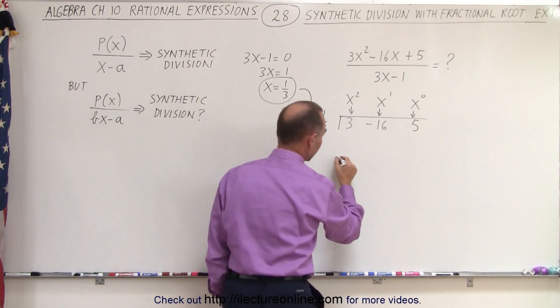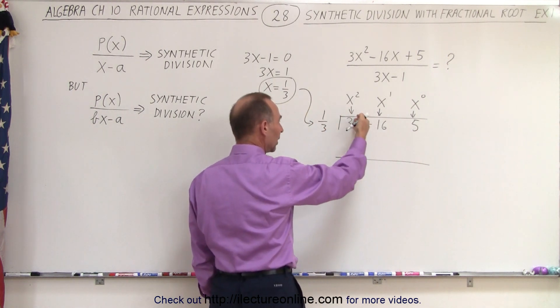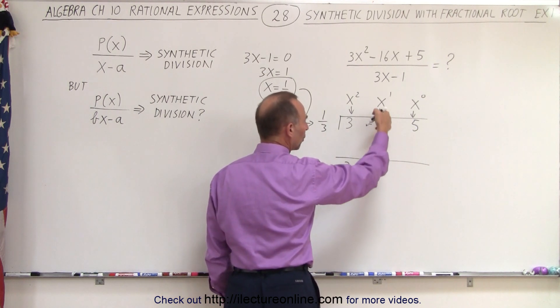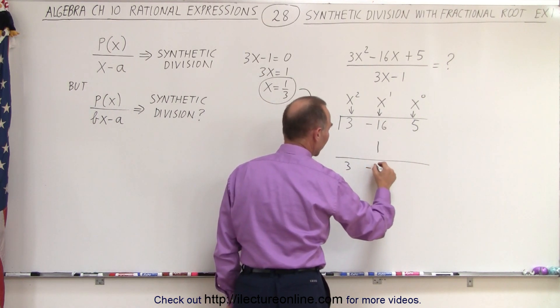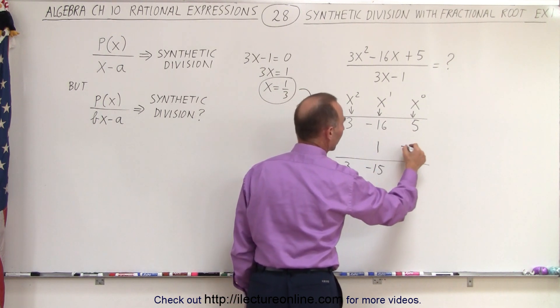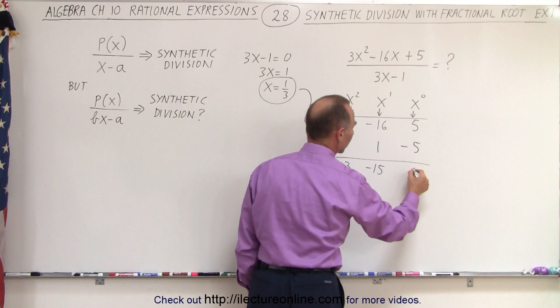Now we draw down the line. Again, we do the same thing. We drop the first number down. Then we multiply 1 third times 3, which gives us 1. We add the two numbers together, which is minus 15. We multiply 1 third times minus 15, which is minus 5. We add the numbers together. We get 0.